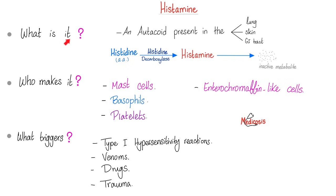So what is histamine? Histamine is an autocoid, which means paracrine or autocrine — usually paracrine. You see it in the lungs, skin, and GI tract. Where did it come from? From histidine. Who makes it? Mast cells, basophils, and platelets, and don't forget the enterochromaffin-like cells, or ECLs. What triggers histamine release? Type 1 hypersensitivity reaction — this is anaphylaxis. You have venoms, drugs, and trauma.